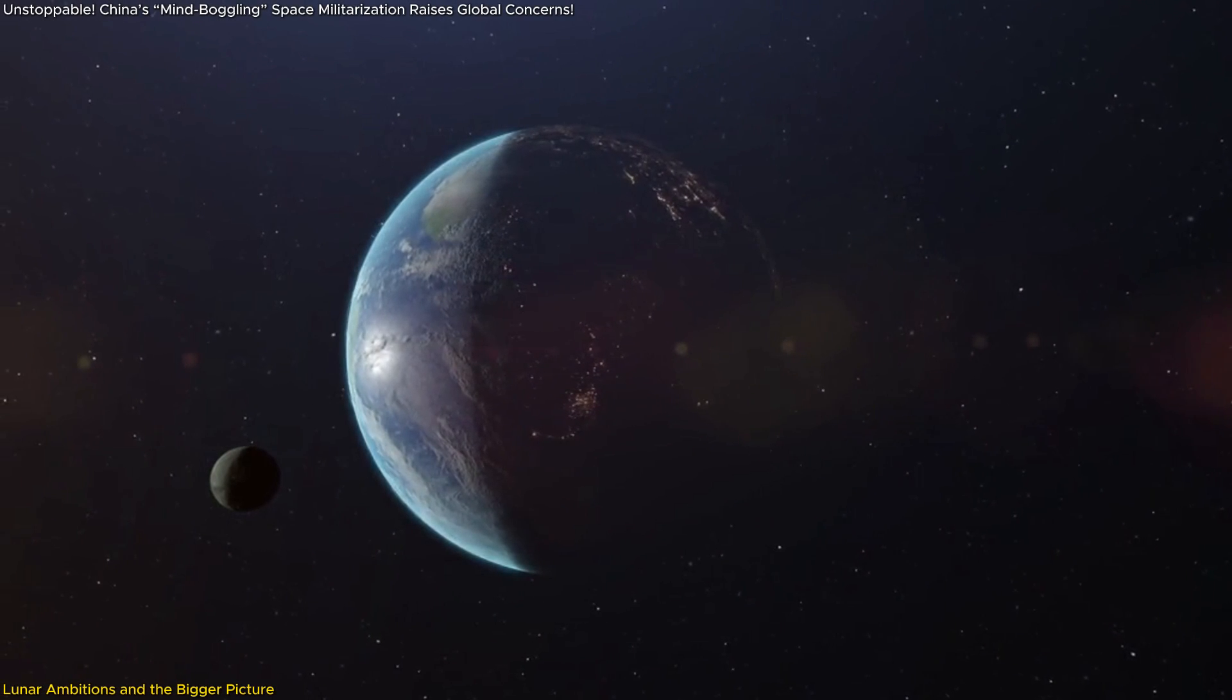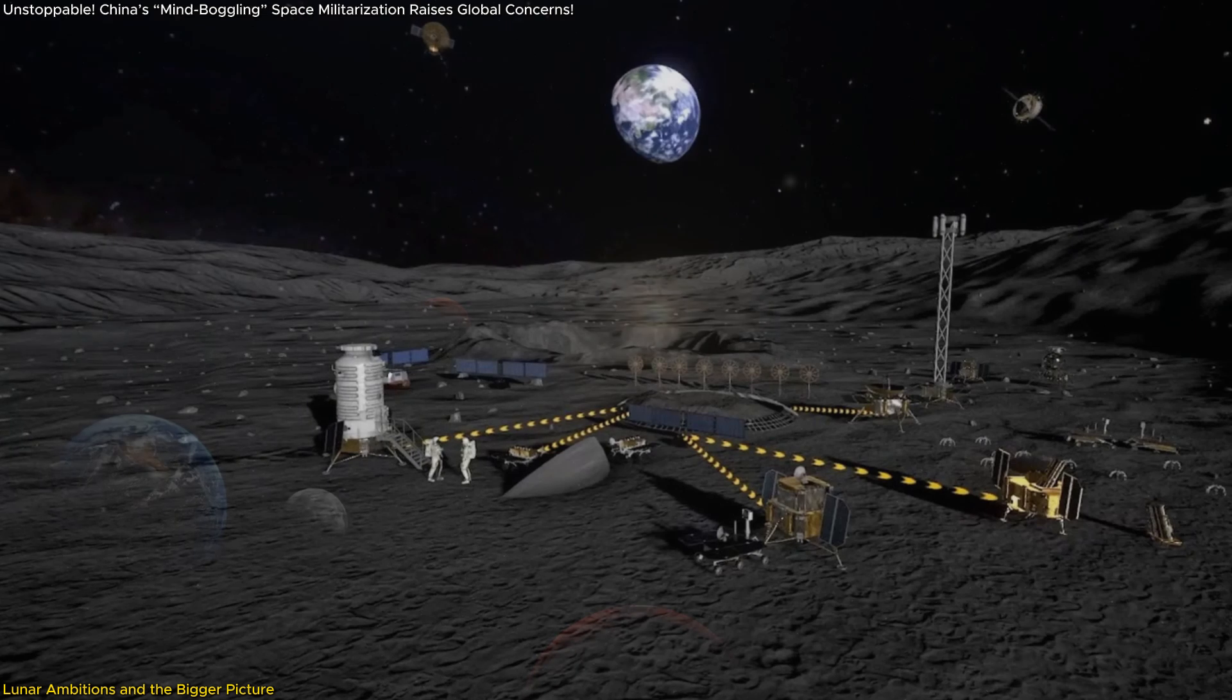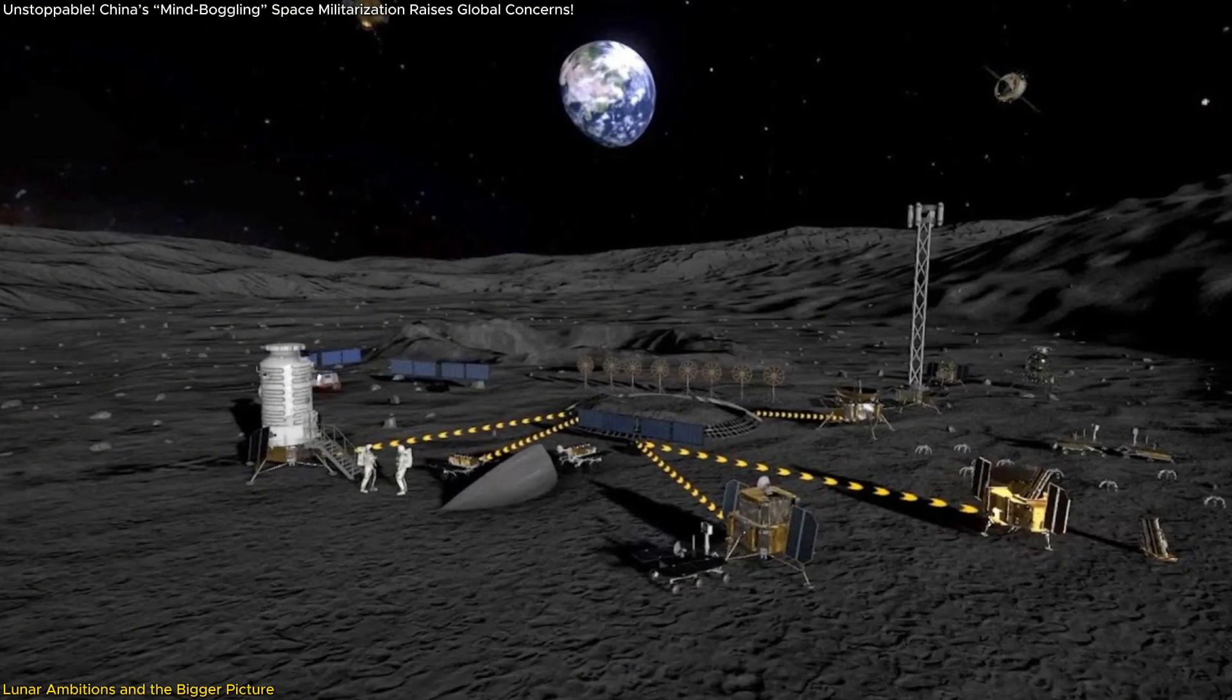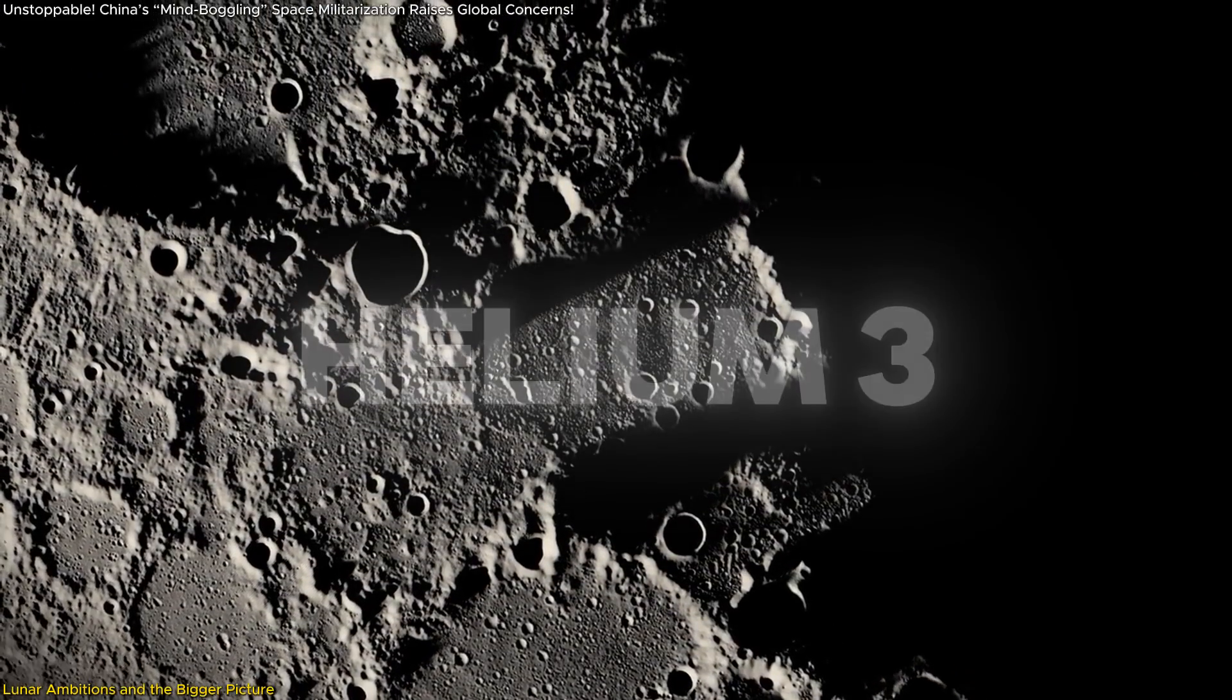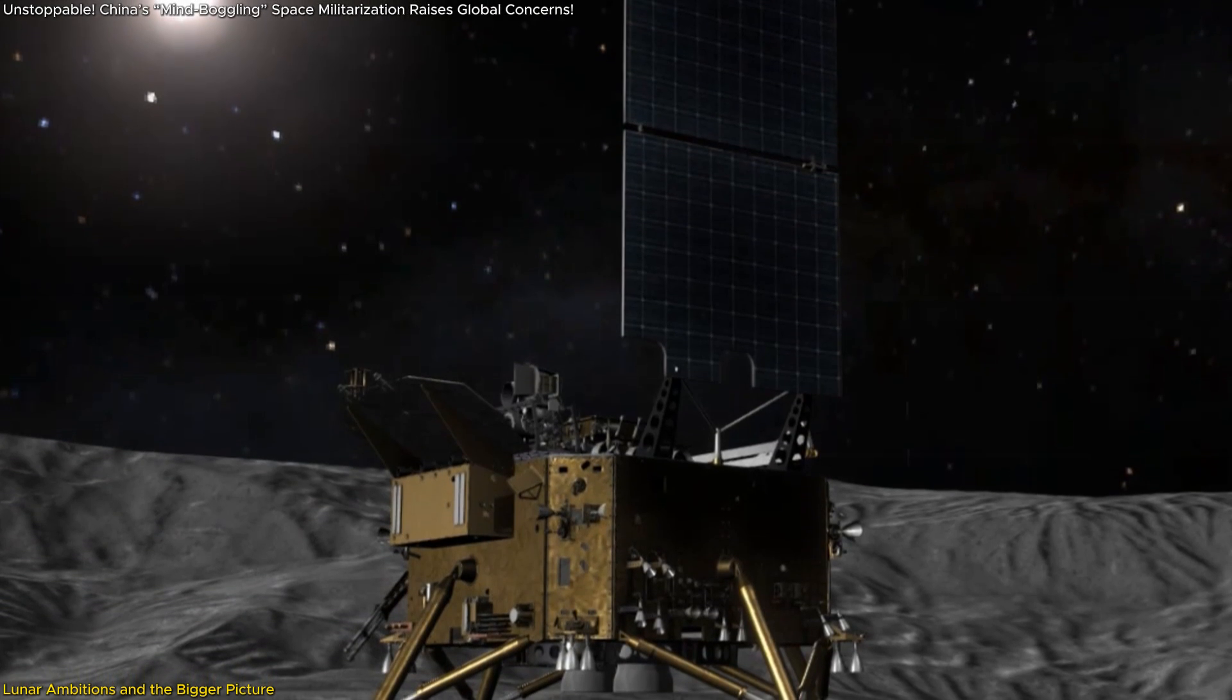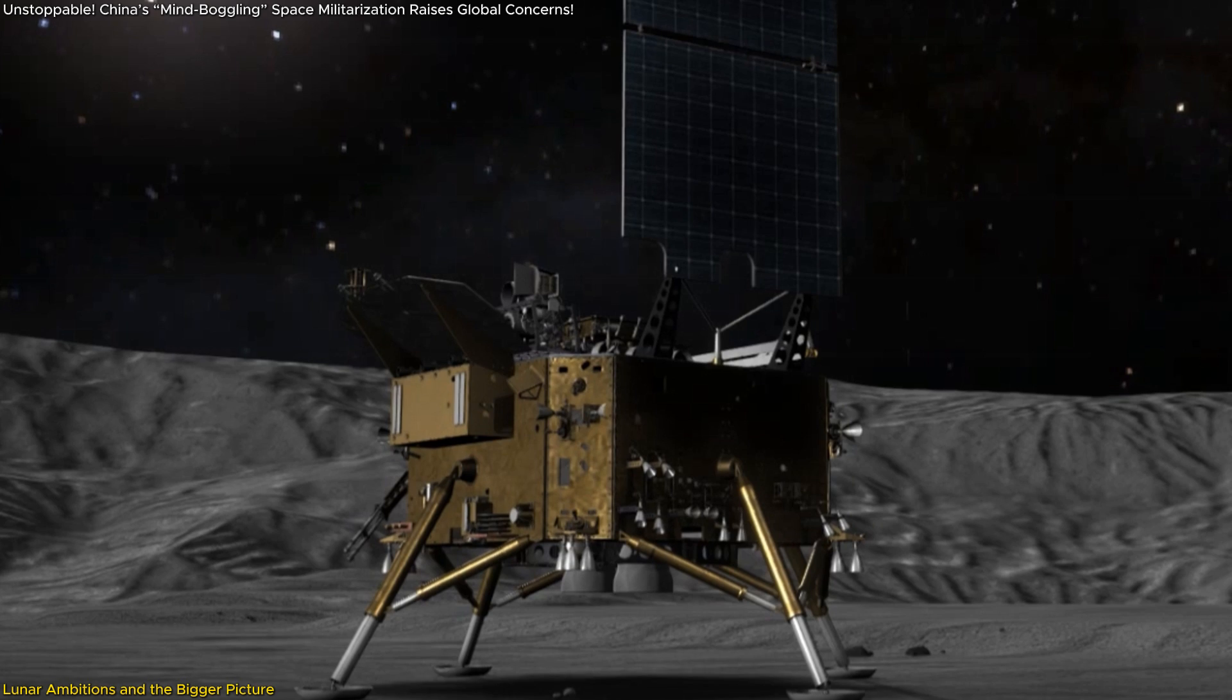China's ambitions don't stop at near-Earth space. They extend to the Moon and beyond. Their plan to establish a permanent lunar presence by 2030 is not just about scientific exploration. It's about strategic dominance. The Moon holds valuable resources like Helium-3, which could revolutionize energy production, and China's focus on securing these resources highlights the economic and geopolitical dimensions of its space program.